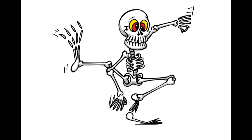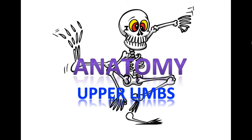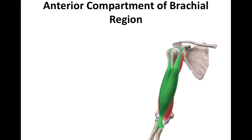Hi everyone, student Dr. Siddiqui here. Today we're going to be talking about the anatomy of the upper limbs. We're going to start off taking a look at the muscles of the anterior compartment of the brachial region.